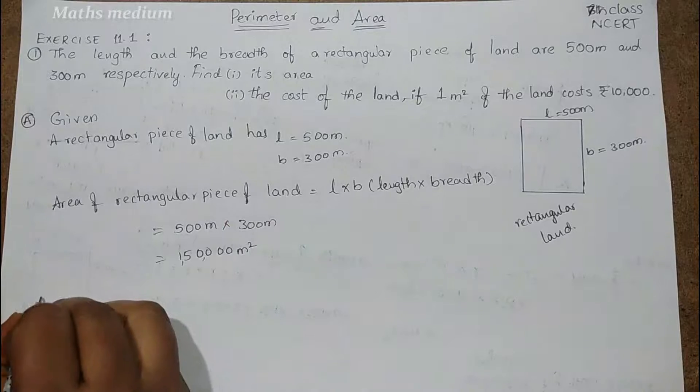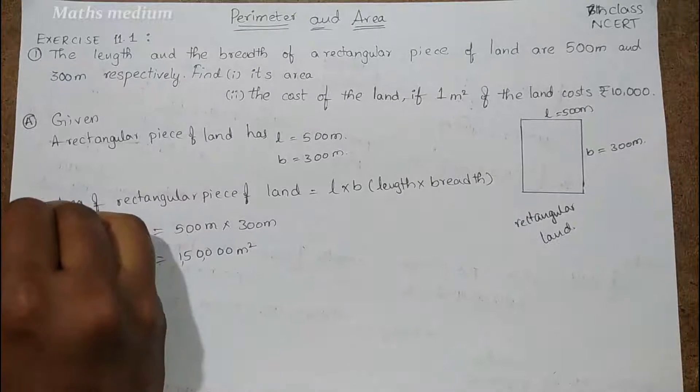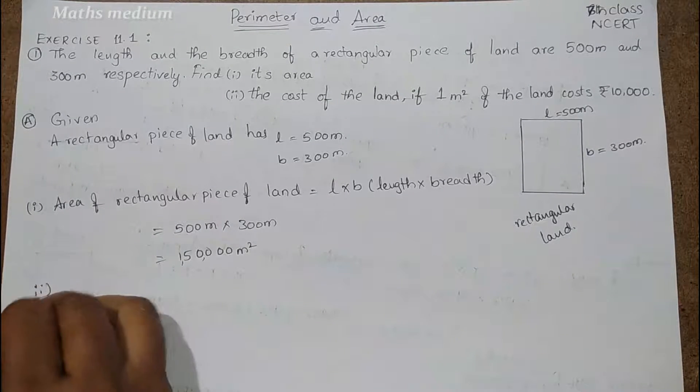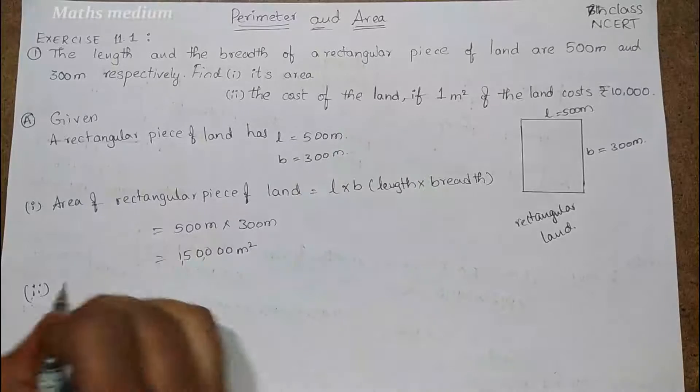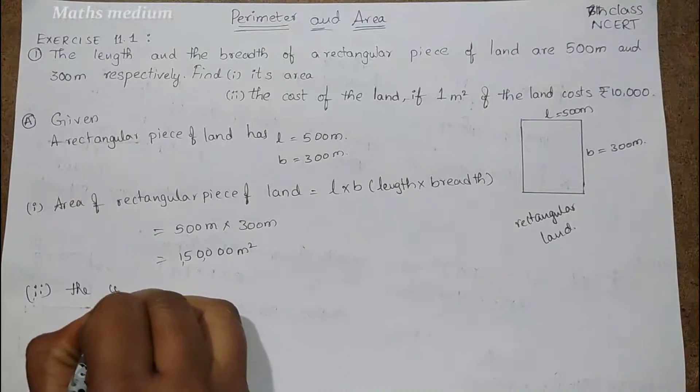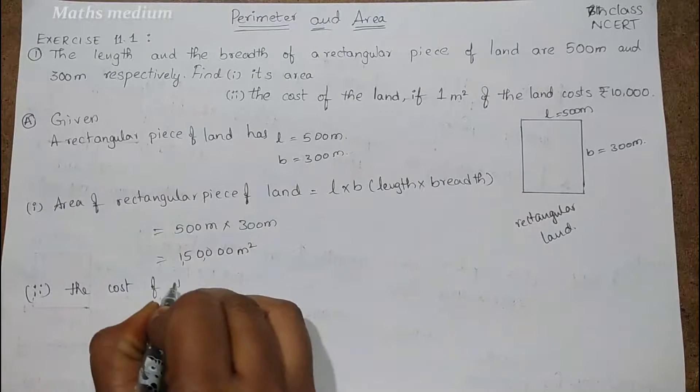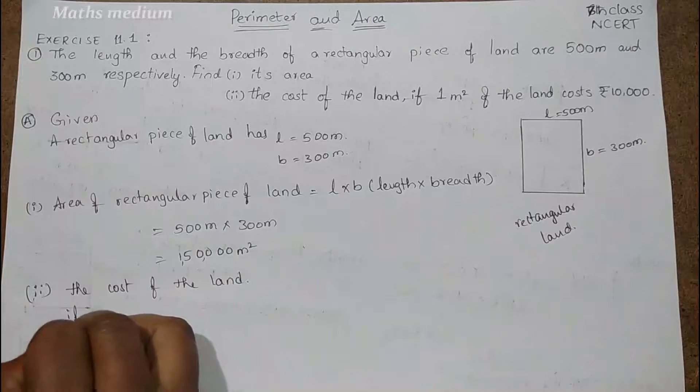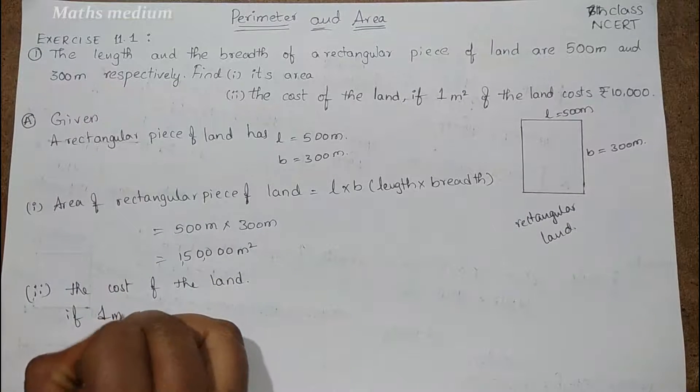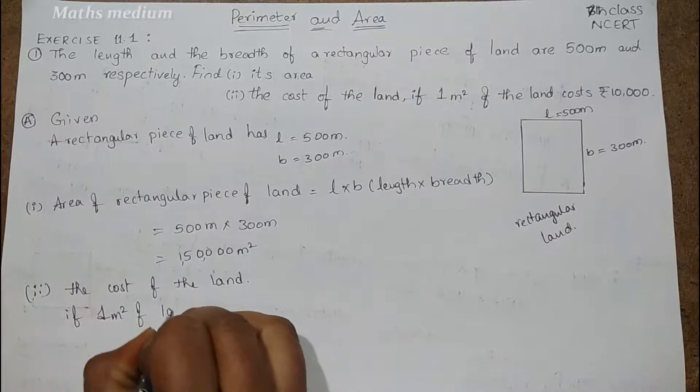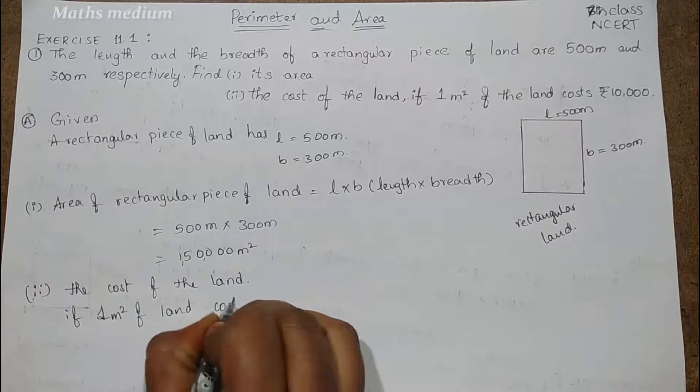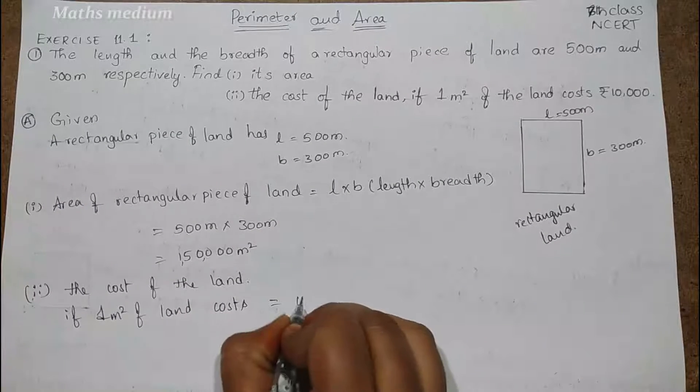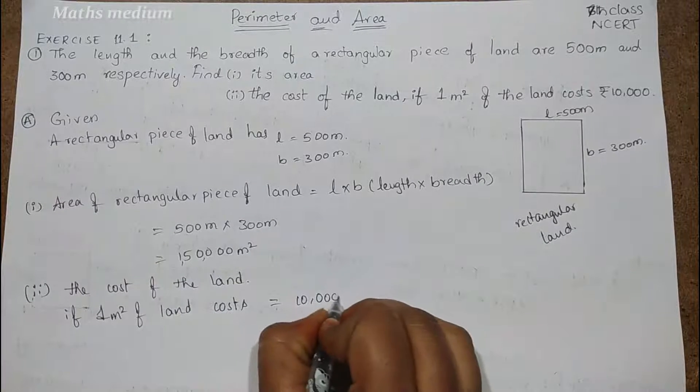Now this is part 1. The second one is the cost of the land. The cost of the land: if 1 meter square of land costs 10,000 rupees,